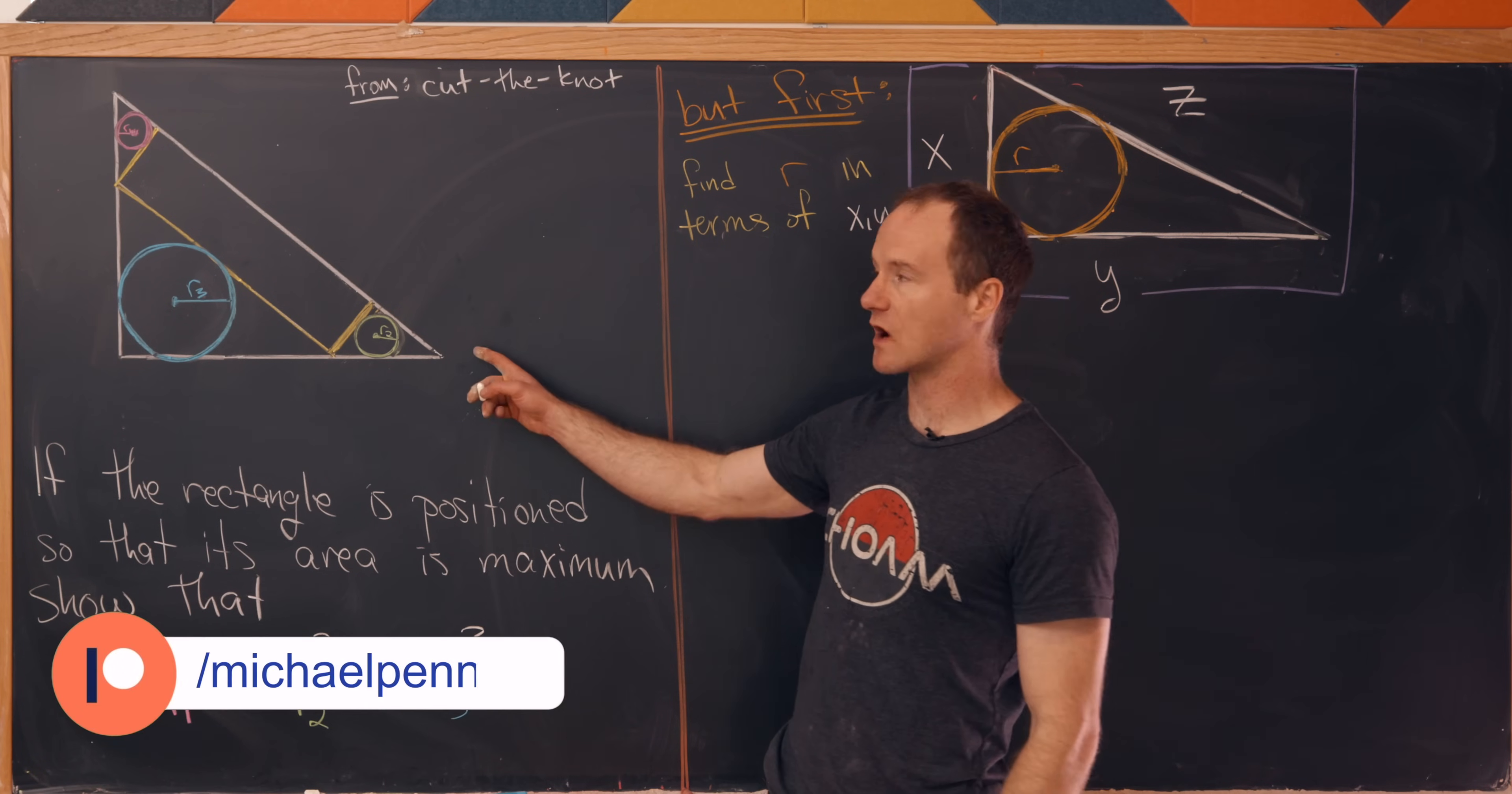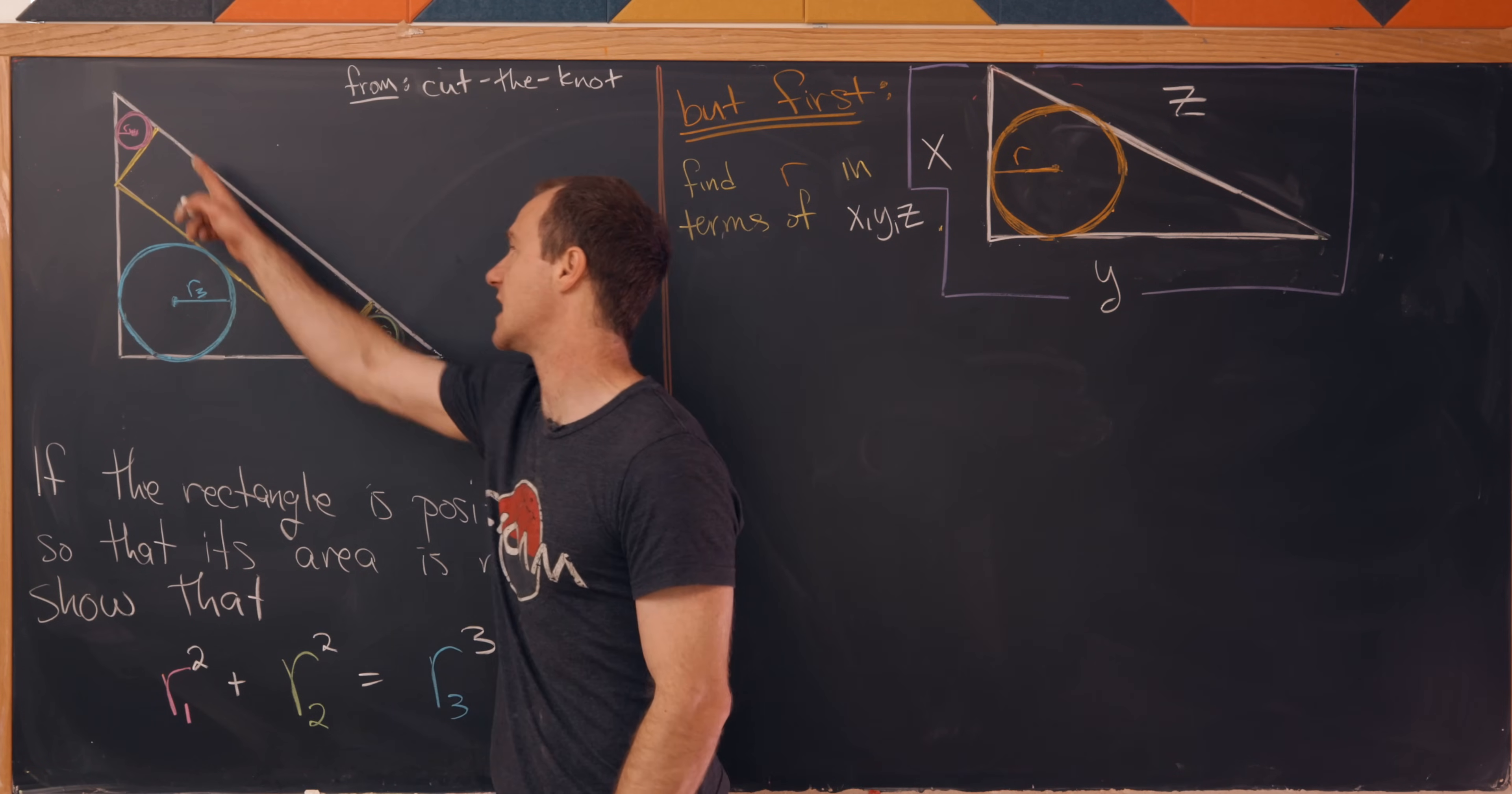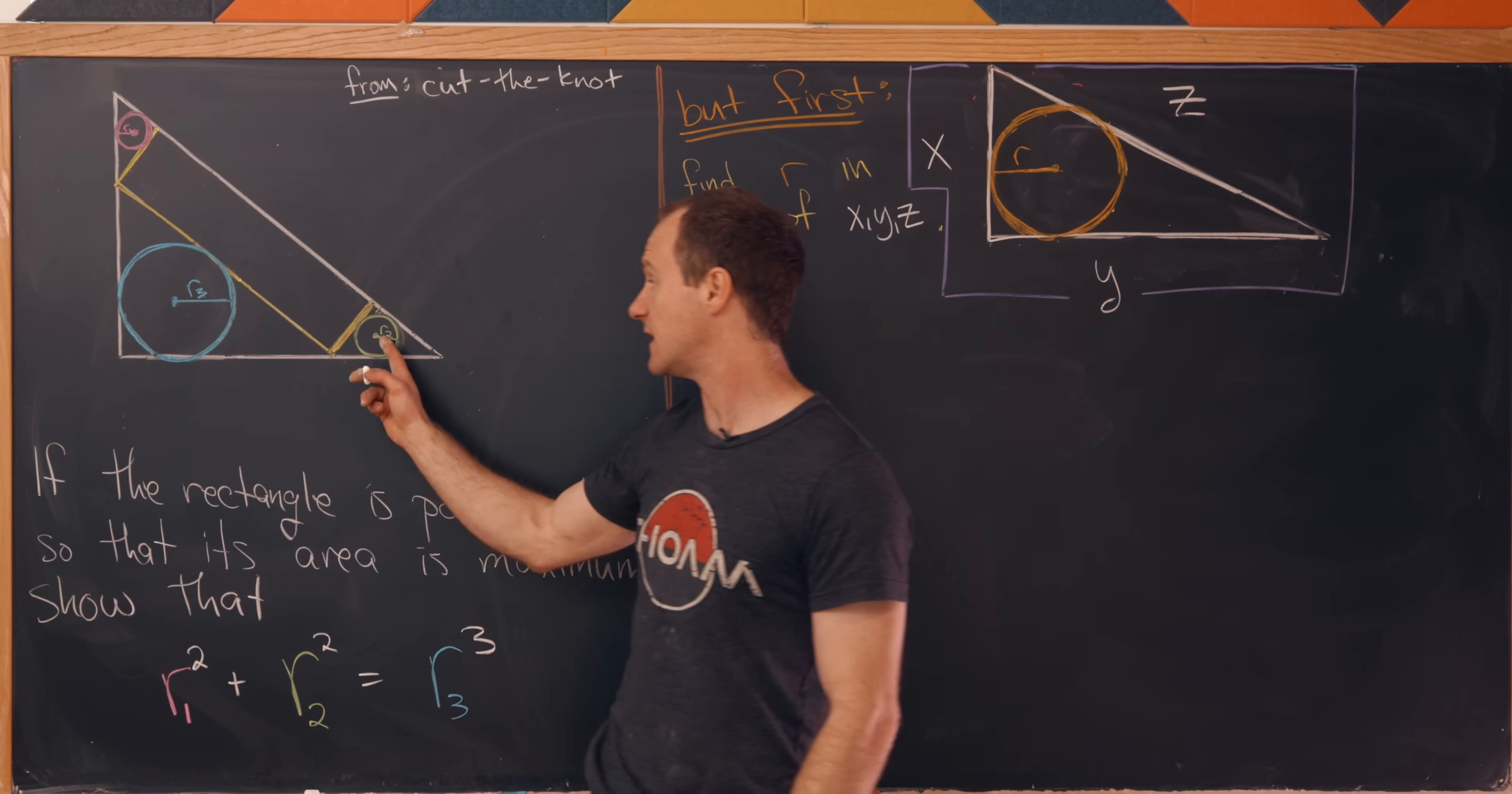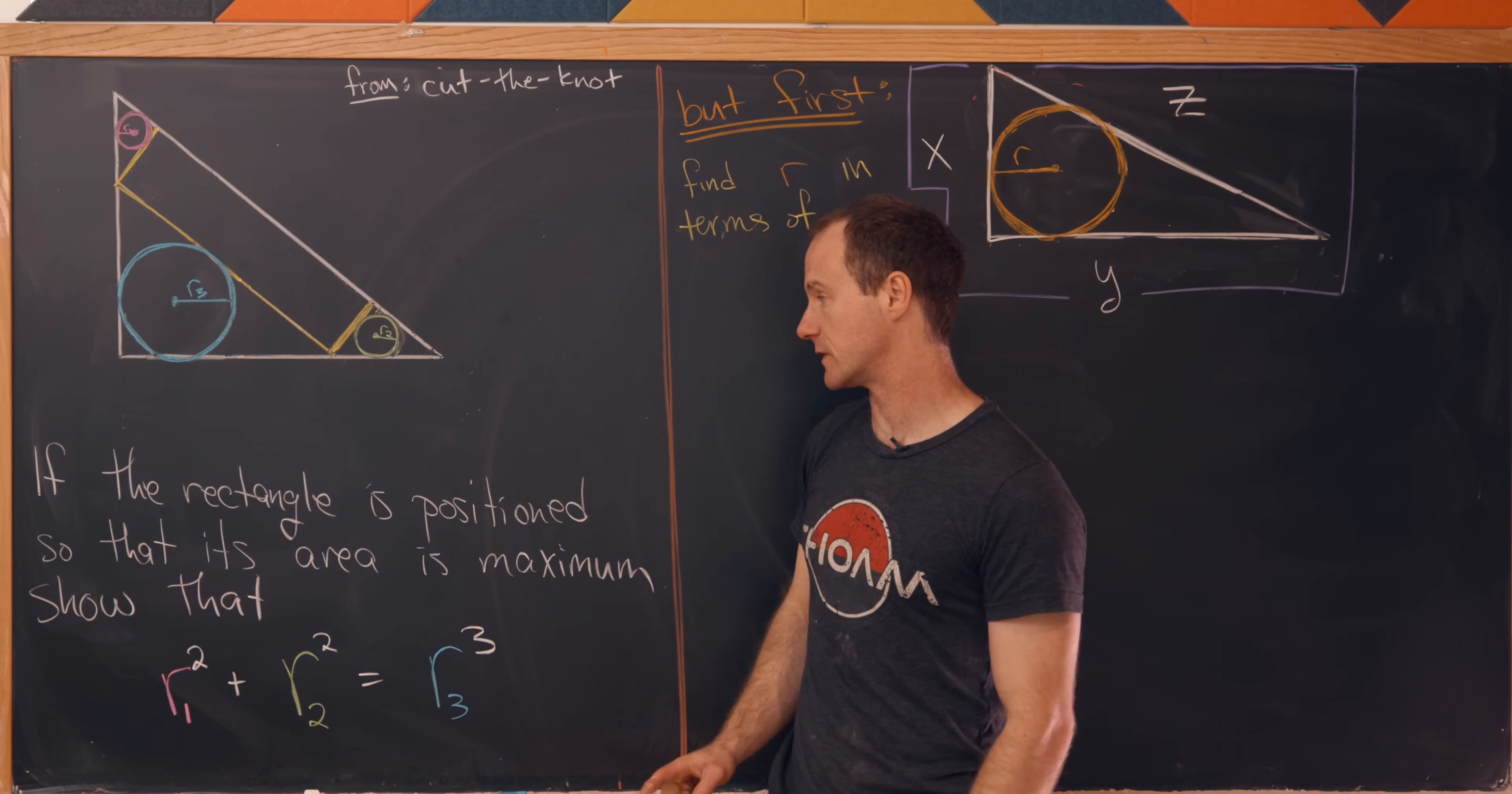So we've got a right triangle. Inside that right triangle we have several things inscribed. The most important at the moment is this rectangle, and one of the sides of that rectangle is a sub-segment of the hypotenuse. And then in the open portions we've inscribed these three circles.